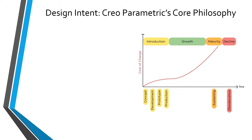If you take a look at the graph, this shows how the cost of implementing a change increases along the lifecycle of a product. Making a change is relatively inexpensive in the early stages of concept and development, but as you start going into prototype and production, the cost of change increases throughout the lifetime of that product.